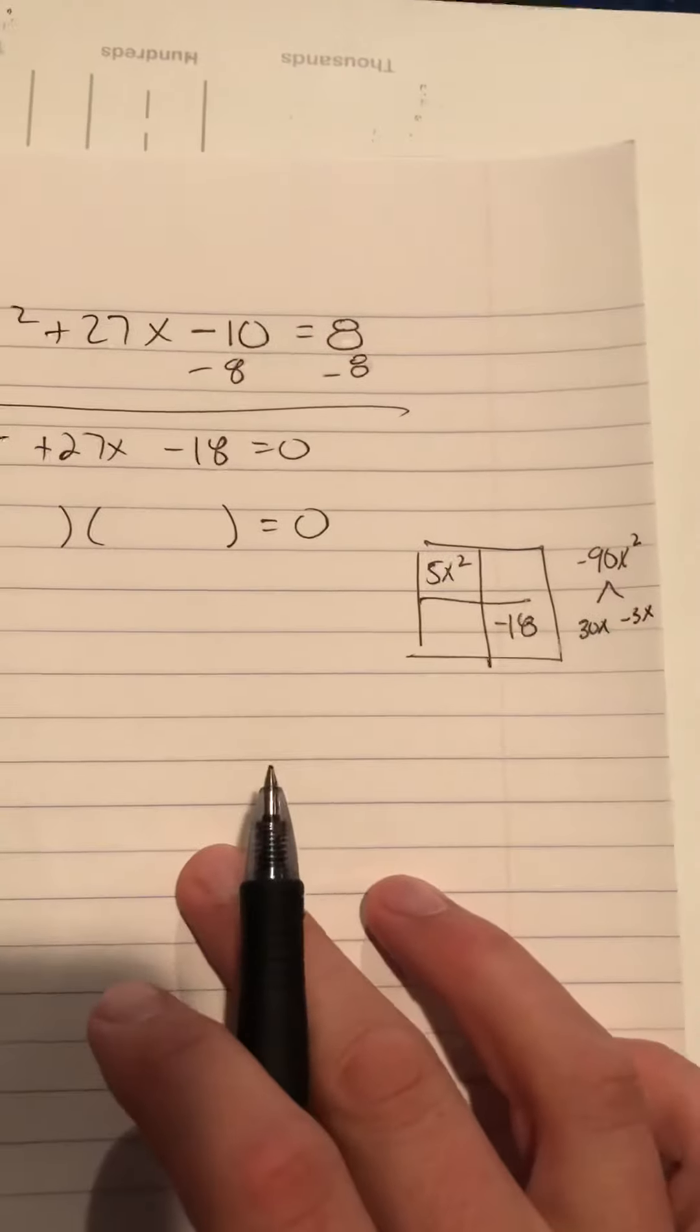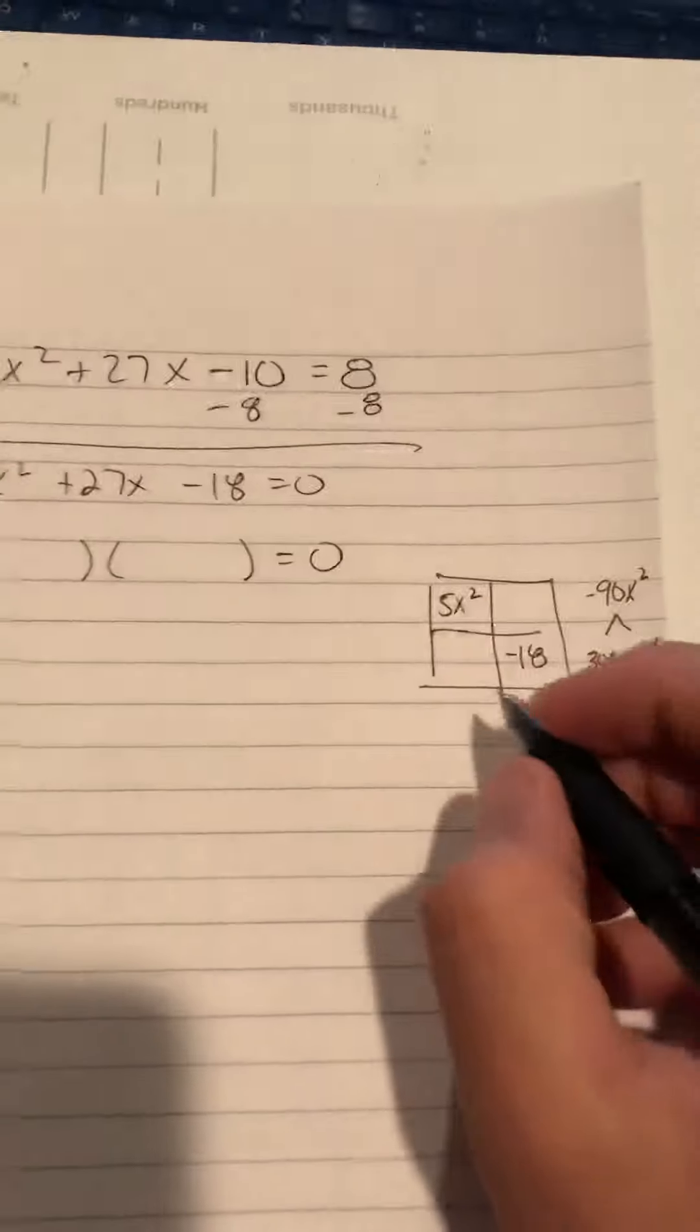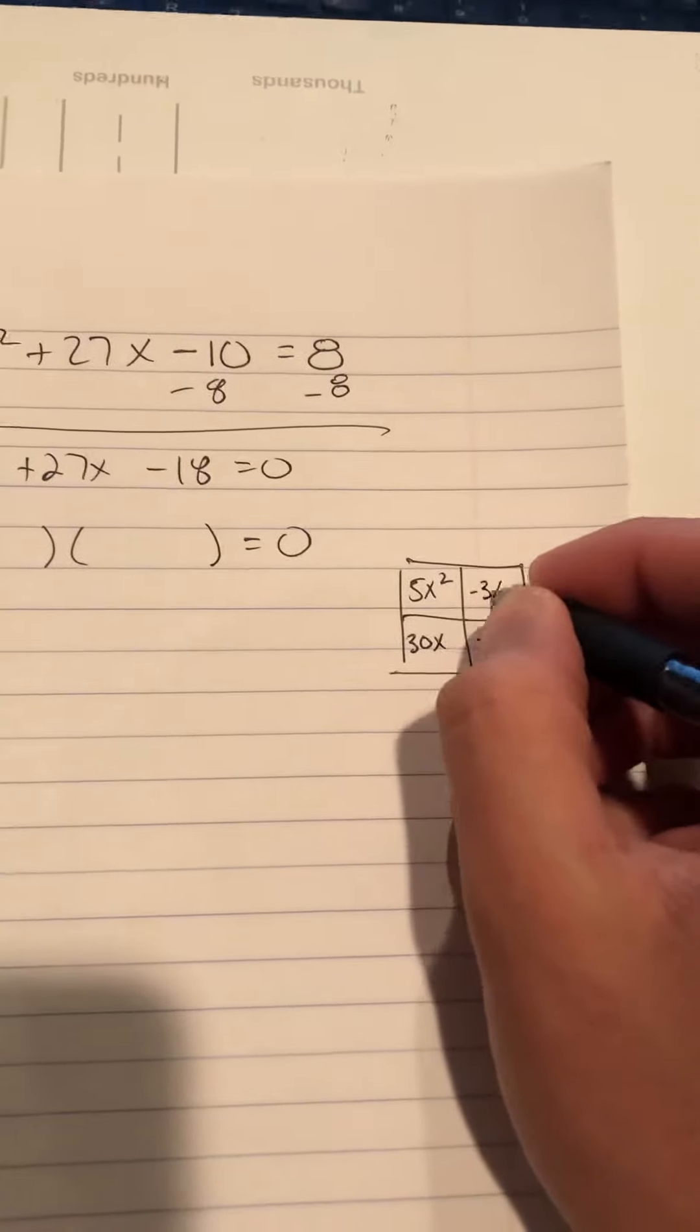Those multiply together to make negative 90x squared, but add to make 27x. I'll then put one of those terms here, 30x, and the other term in the other box.